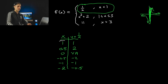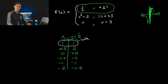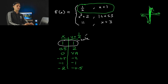This point at x equals 1 is going to end up being a hole on the graph because we're not including the 1. If it said x is less than or equal to 1, then this would be solid. But in this case, it's going to be a hole.